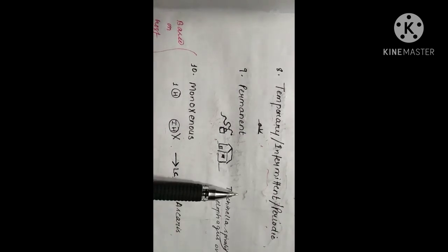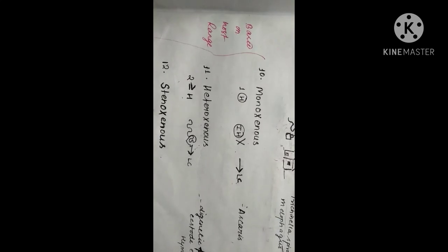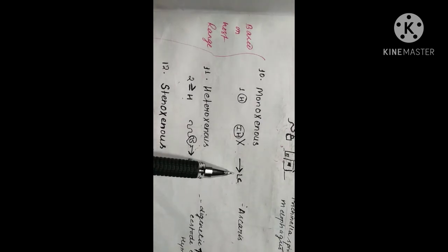Trichinella spiralis is present in pigs and humans. Now, there comes the monoxenous parasite, which is based on host range. Monoxenous parasites are those parasites having a single host, meaning there is no intermediate host in their life cycle. Not having an intermediate host means their life cycle is direct. For example, Ascaris.